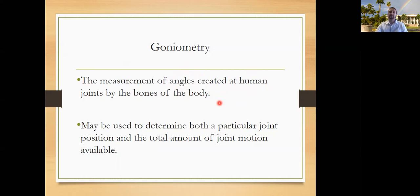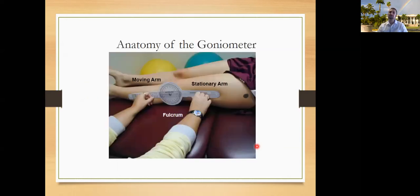So we care about that total joint motion, the arthrokinematics or the amount of motion at the joint. Then you also have to consider the passive and active structures—the capsule, the ligaments, the flexibility of the muscles around the joint—because all of those things can affect the total degrees you get when you measure with the goniometer, either actively or passively.